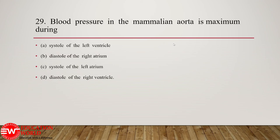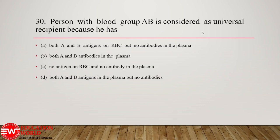Question number 29: blood pressure in the mammalian aorta is maximum during the systole of the left ventricle. Option A is correct because the wall of the left ventricle is thicker compared to the right ventricle, and when left ventricular contraction takes place, vigorous systolic pressure is generated. Question number 30: a person with blood group AB is considered a universal recipient because he has both A and B antigens on the RBC but no antibodies in the plasma. Option A is correct.